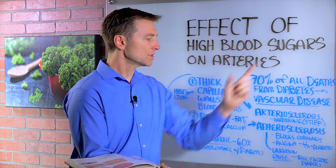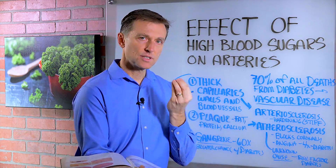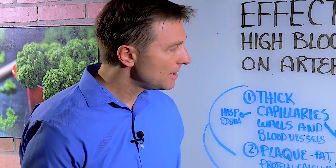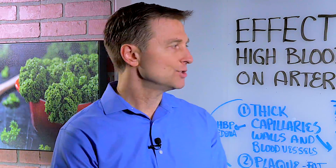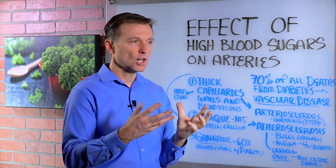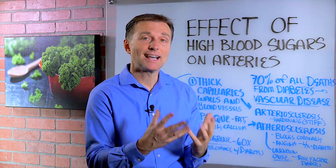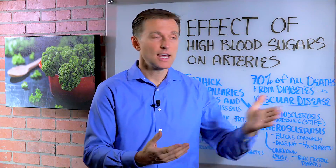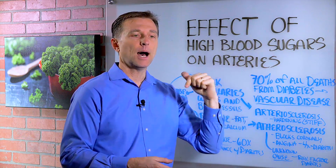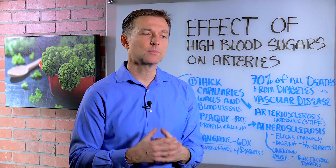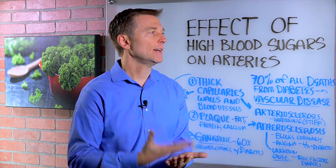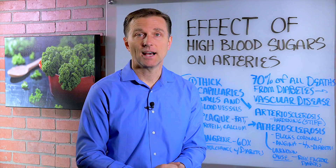So high blood sugar is the cause because there's a dysfunction with insulin. The best thing to do if you're a diabetic is make sure you do everything you can to bring these sugars down naturally and improve the underlying cause, which is high levels of insulin that then lose their function and can't control it anymore. I put a link below with some great information on what to eat to support healthy blood sugars. Check it out.